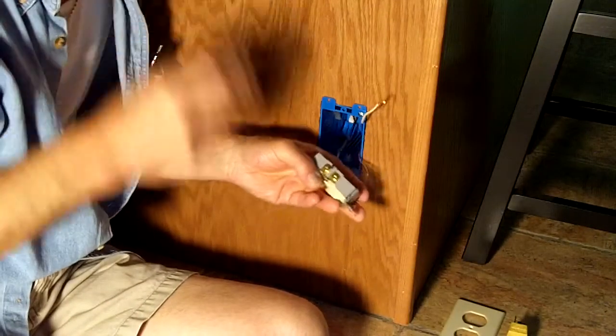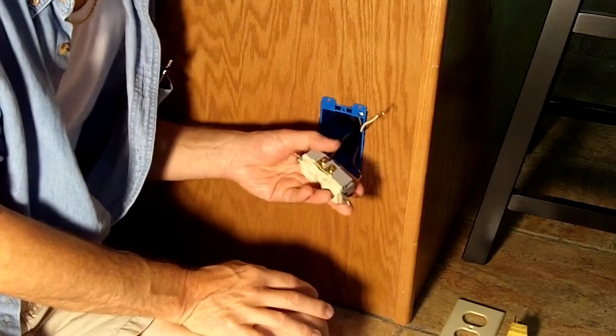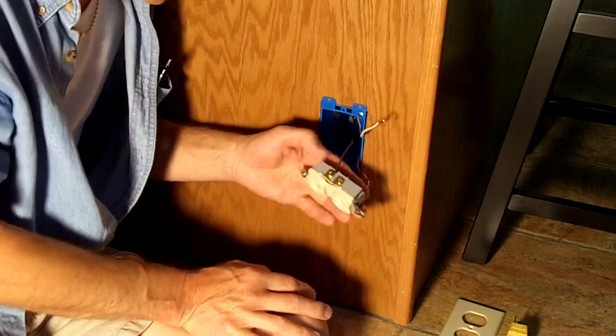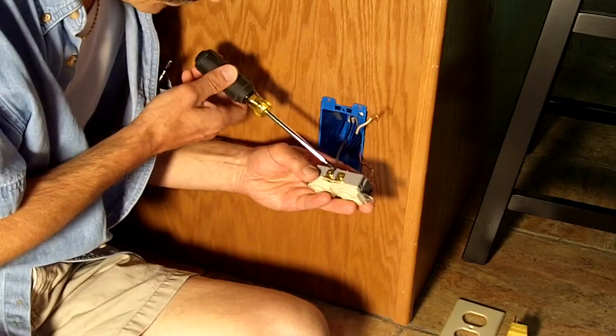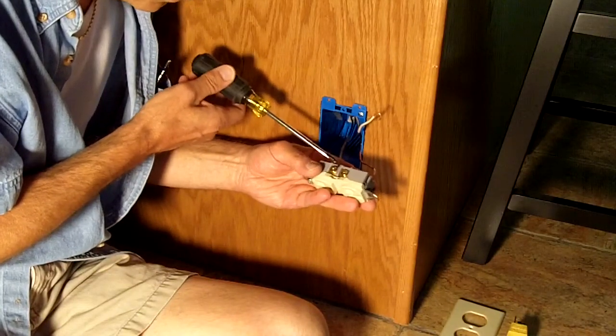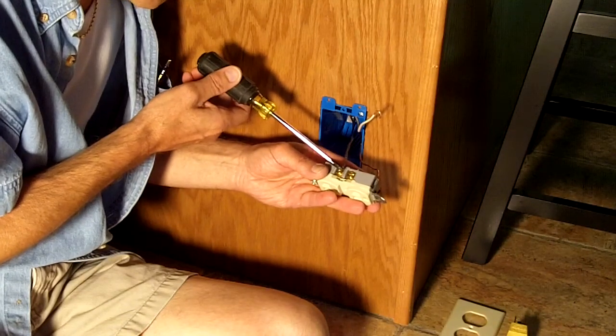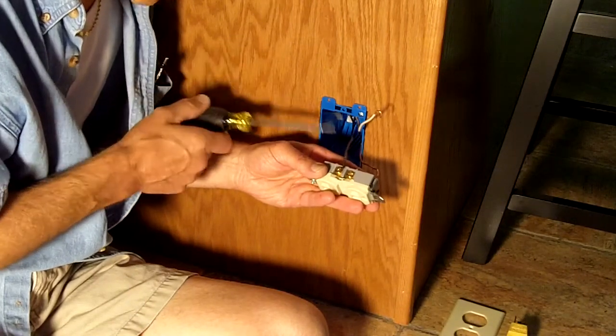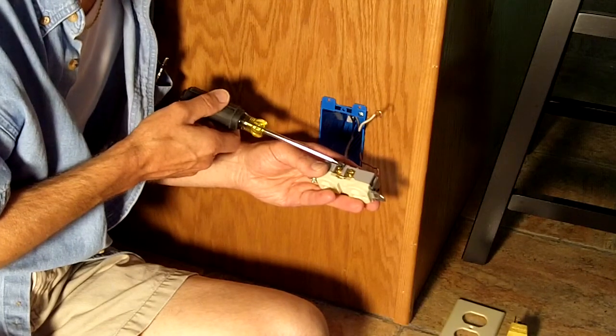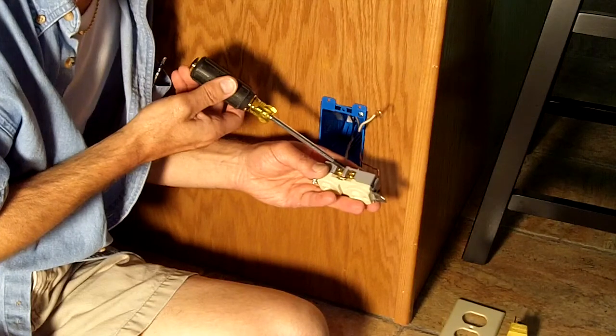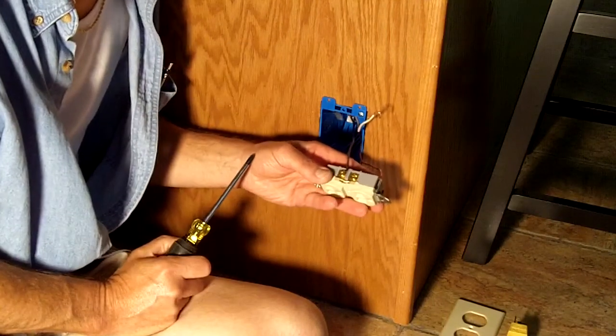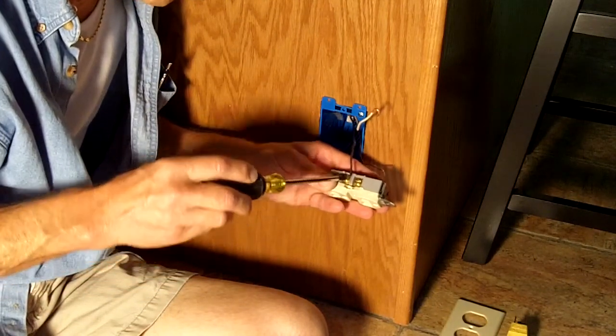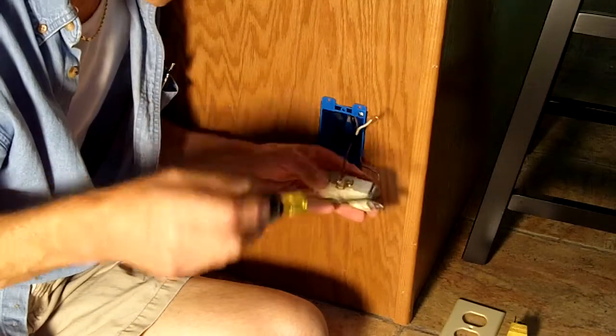Now after you've done one of these terminations, you need to inspect it closely. If you had too much insulation stripped off, what you would end up with is too much bare copper hanging off the back side. You don't want that. You want just enough stripped off so you got bare copper underneath that screw and insulation everywhere else. If you didn't have enough insulation stripped off, you might end up having some insulation underneath the screw, and that's another inspection point. You don't want insulation under that screw—you want to make sure there's bare copper under that screw. If you have insulation under that screw, you don't have a good connection and you have to redo that.